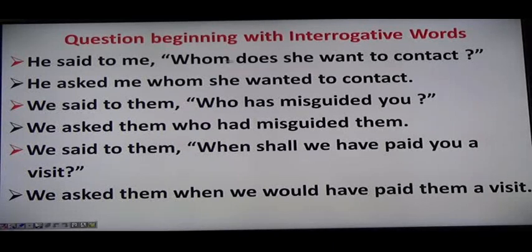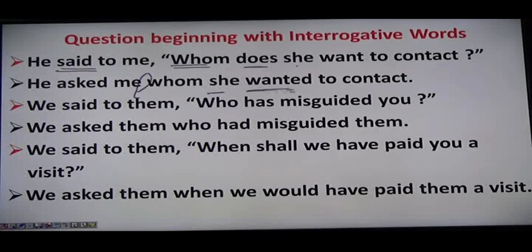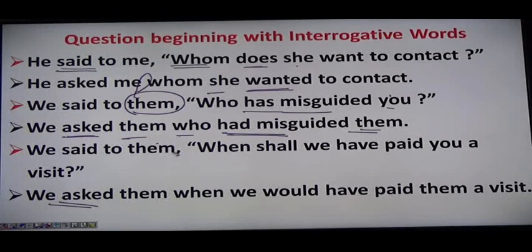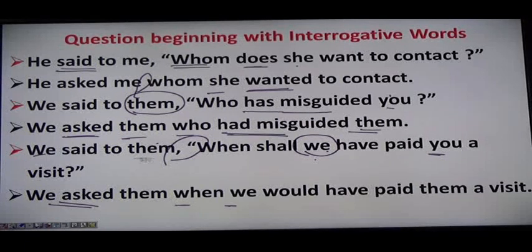When we have interrogative WH-series words, no conjunction is needed. Example: He said to me, 'Whom does she want to contact?' He asked me whom she wanted to contact — present definite changes to past definite. We said to them, 'Who has misguided you?' We asked them who had misguided them — present perfect changes to past perfect. We said to them, 'When shall we have paid you a visit?' We asked them when we would have paid them a visit.